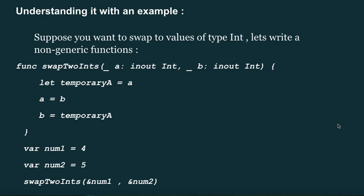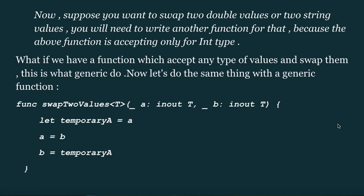With the non-generic function, if you want to swap two double values or two string values, you would need to write another function because that function only accepts int types. But with a generic function, you can accept any type of values and swap them — this is what generics do.